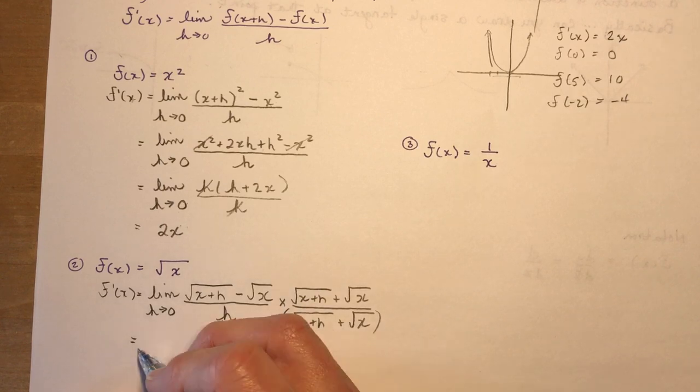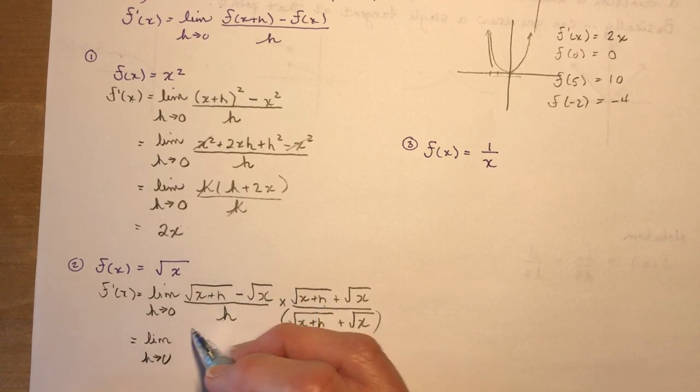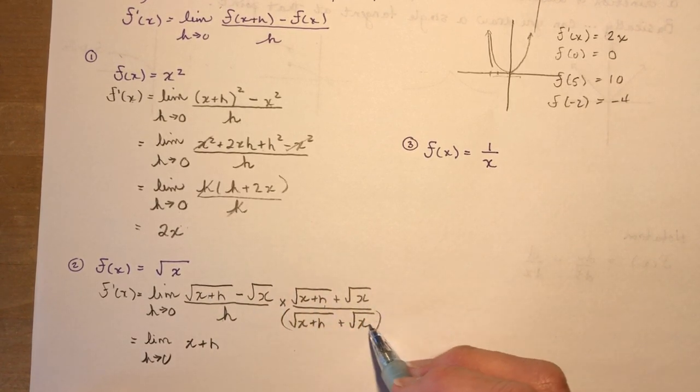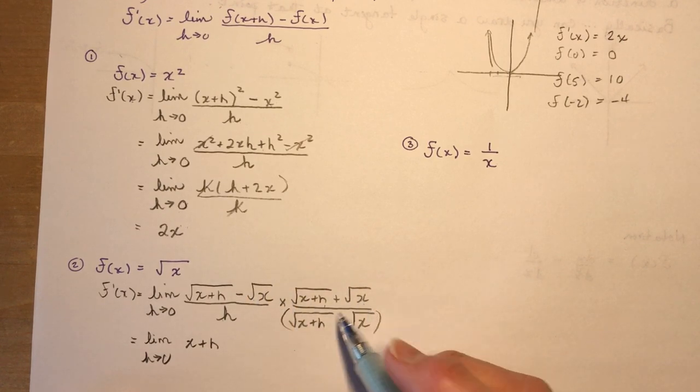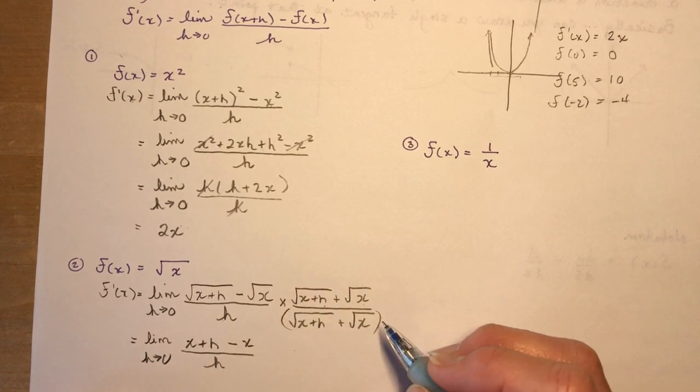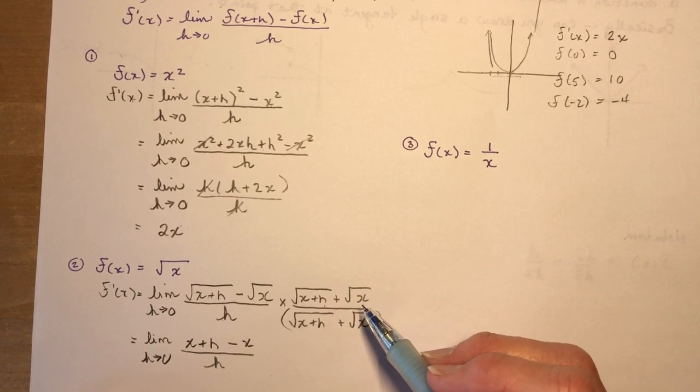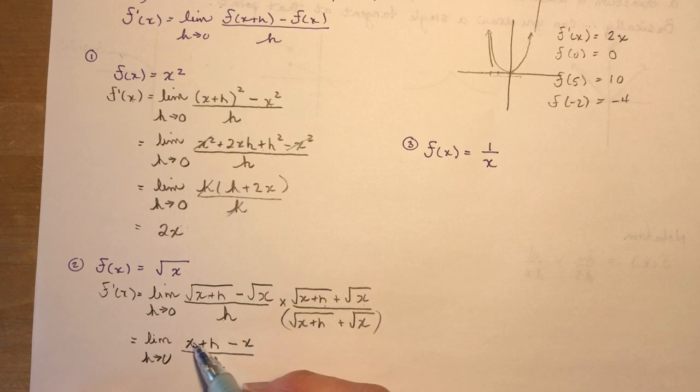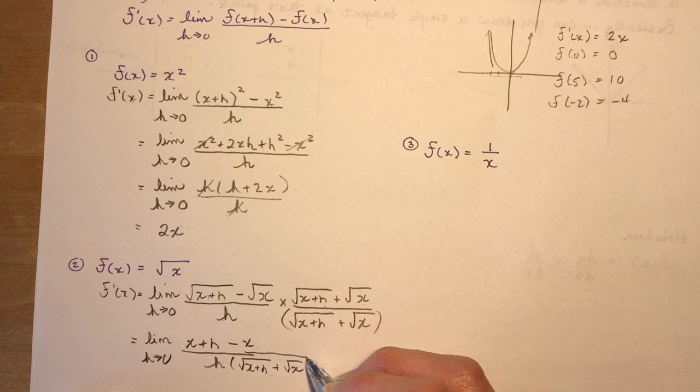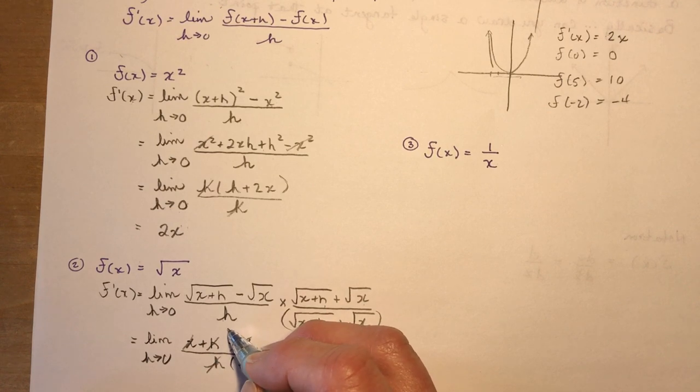So I write this out, and whatever you do to a numerator, you must do the same to the denominator. Don't forget that we now have this times this in the denominator. So I expand, and I have the limit of h approach to zero. Root x plus h times root x plus h is x plus h, and negative root x times positive root x is minus x. The x's cancel out.